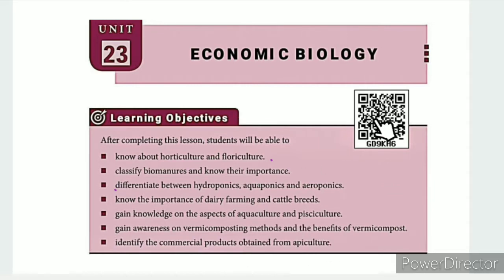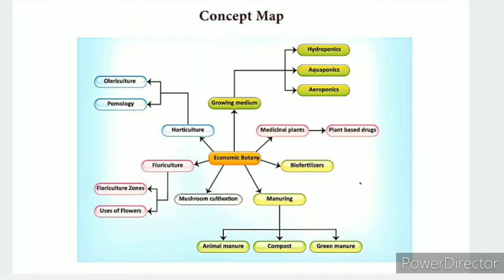This is the QR code link in the lesson guide, shown in the description box. The concept map for this lesson is the second map. The first map covers economic botany.